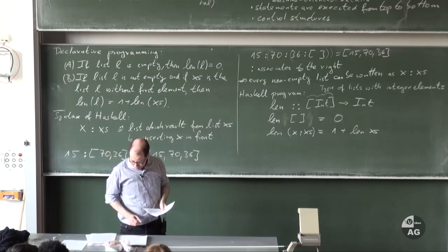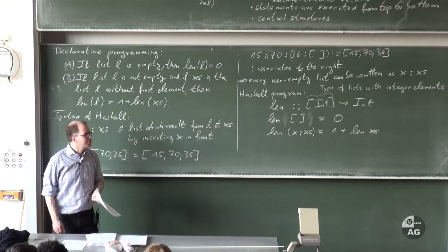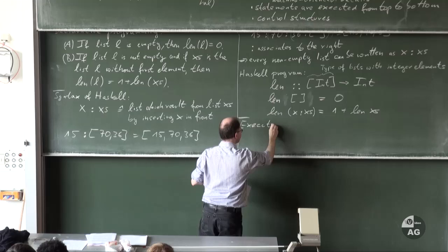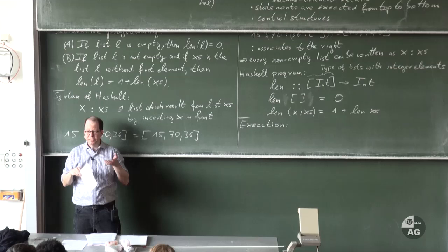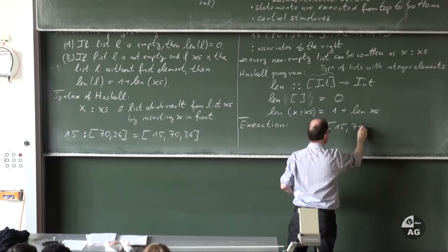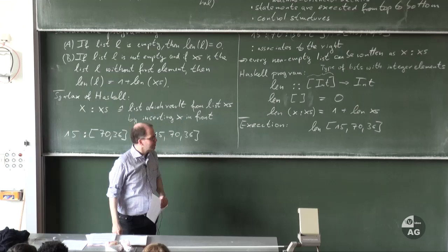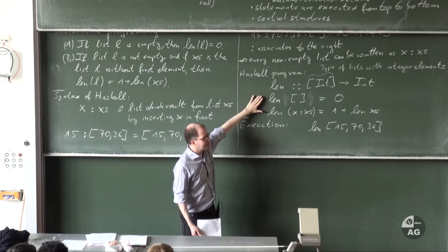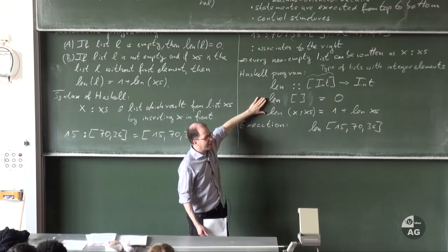How do you execute such a program? In Haskell it's like a pocket calculator: you type in some expression and then Haskell tries to evaluate it. For example, I can type len [15, 70, 36] and press return, and Haskell should give me the result by simplifying this expression. Haskell uses its knowledge — the definition of length — and tries to simplify by applying those equations.